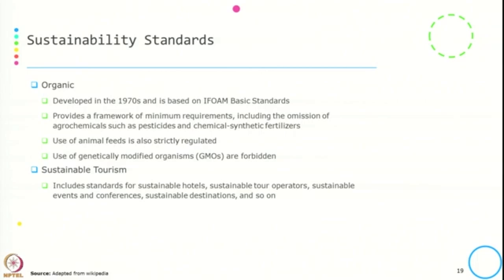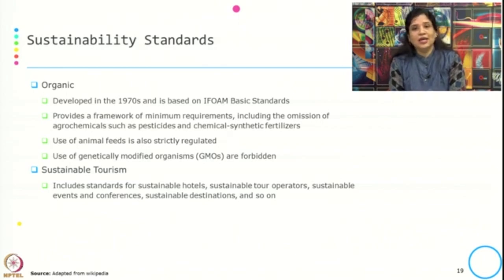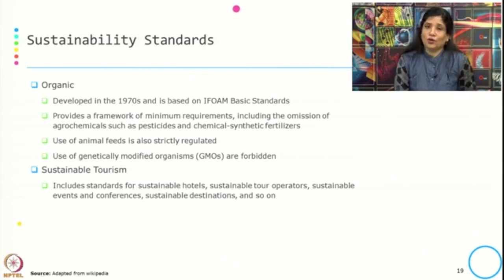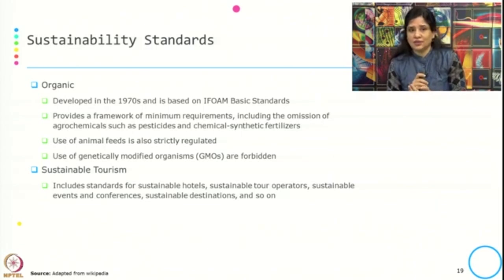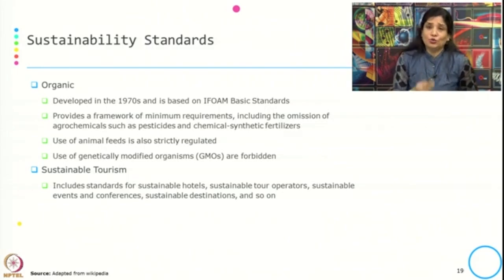The other sustainability standard is Organic. It developed in the 1970s and is based on the IFOAM basic standard. It provides a framework of minimum requirements including the omission of agrochemicals such as pesticides and chemical synthetic fertilizers. Use of animal feed is also strictly regulated and use of GMOs — genetically modified organisms — are also forbidden.